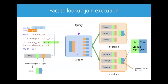Here's an example of a fact-table-to-lookup join execution. The fact table is the traditional Druid datasource and the thing we're joining against is a lookup. The query is written as: SELECT ... FROM flights_fact JOIN lookup.airport_join ON ... — 'lookup.' is how the SQL layer knows it's a lookup table. We're going to get the description, total the number of flights, and return results. Just like every Druid query, the broker is the service that first gets the query, and the Druid historicals are the services that have all the historical data and process the row-by-row aspects.